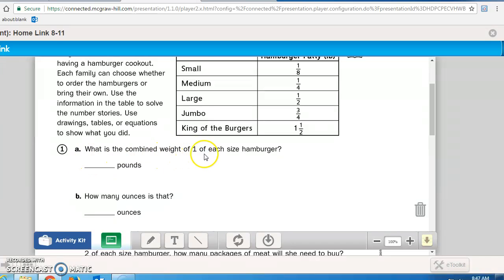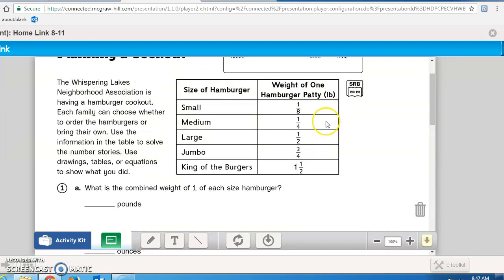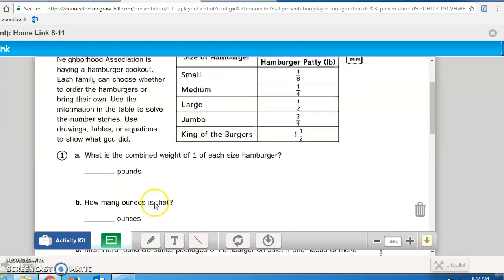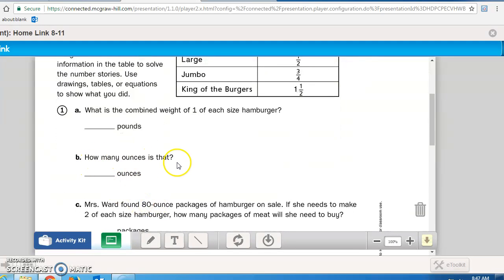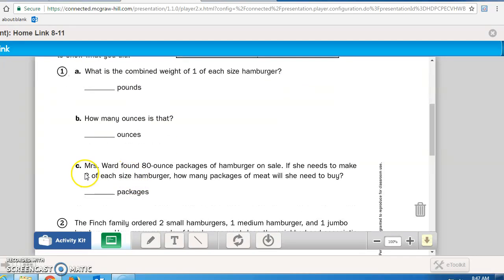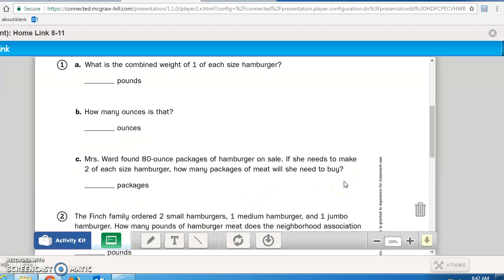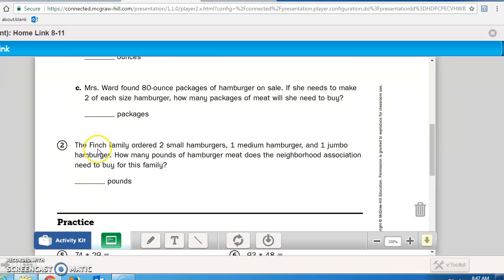So you'd have to combine these together to get it in pounds. B: How many ounces is that? So you can convert those pounds into ounces. C: Mrs. Ward found 80-ounce packages of hamburger on sale. If she needs to make two of each size hamburger, how many packages of meat will she need to buy?